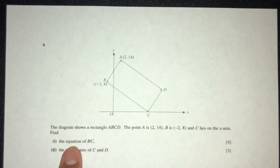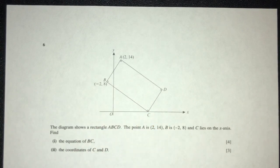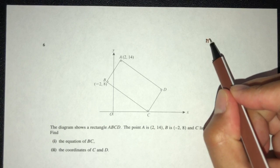Now part 1, find the equation of BC. BC is this one. Now again, we understand BC is a straight line. To find the equation of a straight line, we must first find the gradient of BC. So, how would you find the gradient of BC?